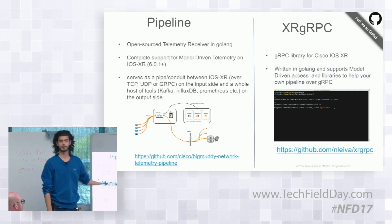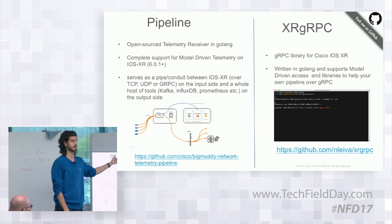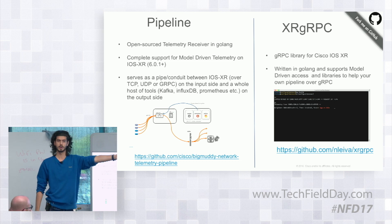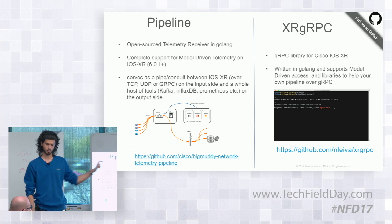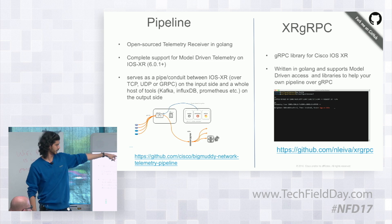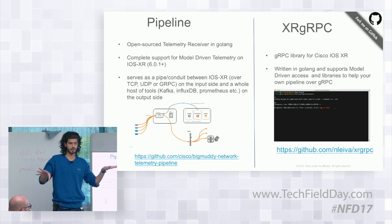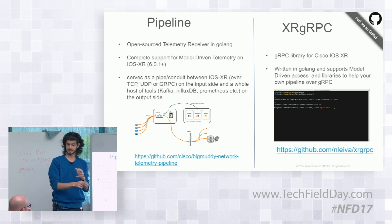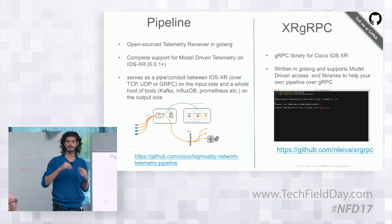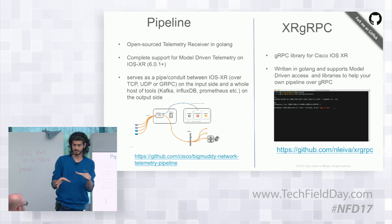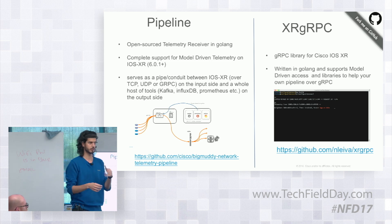In addition, Pipeline — which Victor will cover — is the open source collector we created that talks to XR over gRPC and receives telemetry data in real time. The xr-grpc library, written by Nikola from our team, is a gRPC library that can do everything on XR — all model-driven APIs, telemetry, service layer APIs — across all layers of the stack through a single library. XR has become completely gRPC-compatible, so if you just want to use gRPC, you can do everything on the box.